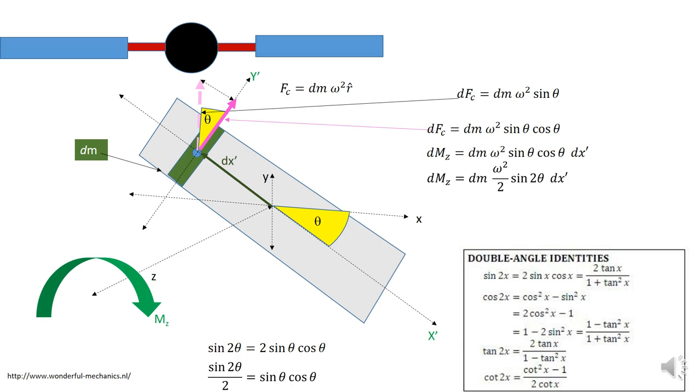So the moment, the centrifugal turning moment due to this little piece here is the mass times omega squared over 2. There's the half we got from down below. Sine of 2 theta times this distance dx prime. So if I wanted to do it for this place from the center out, I would have to integrate. So it becomes omega squared over 2 sine 2 theta, the integral of dx times dm.